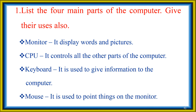The fourth part is the mouse. It is used to point things on the monitor. So, the four main parts of the computer are: monitor, CPU, keyboard, and mouse.